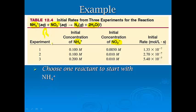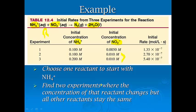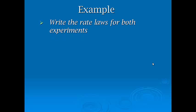So we choose one reactant to start with. Here we're going to choose ammonium. What we're looking for is two experiments where everything else stays the same and ammonium is the only one that changes. So if you look at two and three, we held nitrite constant and we changed the other one. So we're looking for experiment two and experiment three. And then you have your initial rates.